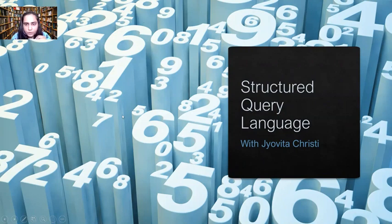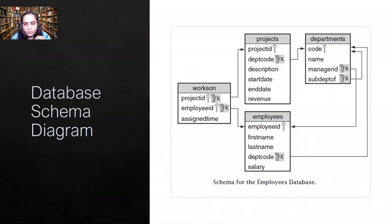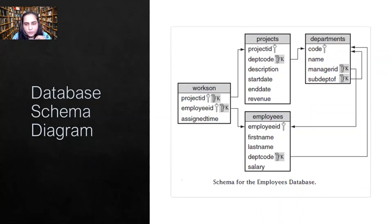Let's get started. This is the database we are going to create. It contains four tables: projects, departments, employees, and works on. It contains a lot of primary keys and foreign keys, and we are going to create all of that. We will create one table, insert data into it, then the second table, insert data, and so on. While creating the table I'm going to create the primary key, but the foreign key I will attach afterwards once the whole database is ready, and I'll show you how to do that.